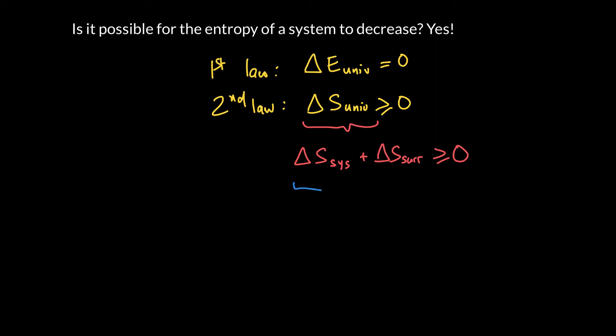For our ice cube example that we saw earlier, when we froze 25 grams of water, this went down by 30.6 joules per Kelvin. So that tells us that the entropy of the surroundings has to increase.